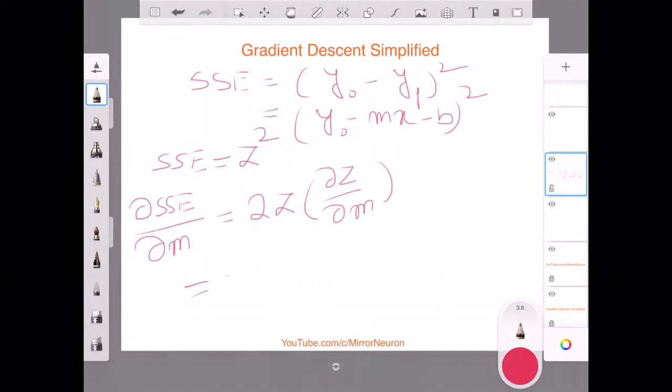And this will be nothing but 2 times z, which is y naught minus y predicted. Basically, I am taking the derivative of y naught minus mx minus b with respect to m.